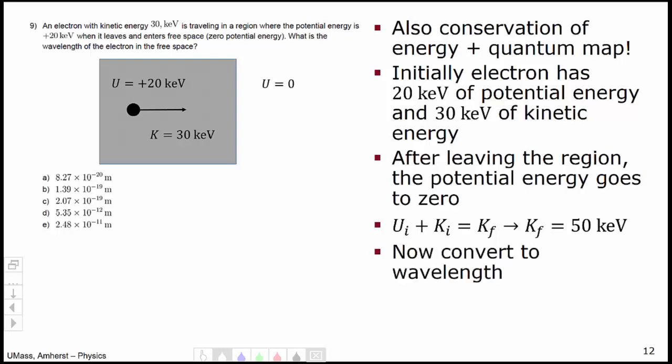Now we just convert to the wavelength of the electron. We know how to convert from kinetic energy to momentum, p squared over 2m. This was discussed in part of your prep for unit 1, and then we can convert from momentum to wavelength using the de Broglie relation. This brings us to option D.